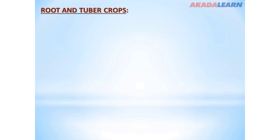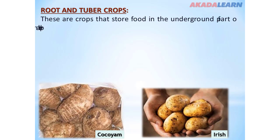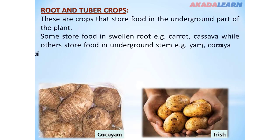We have the root and tuber crops. These are crops that store food in the underground parts of the plants. Some store food in the swollen roots, e.g., carrot and cassava, while others store food in underground stems, e.g., yam, cocoyam, and Irish potato.